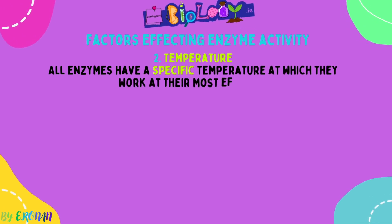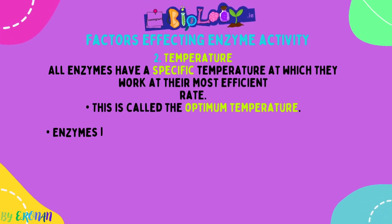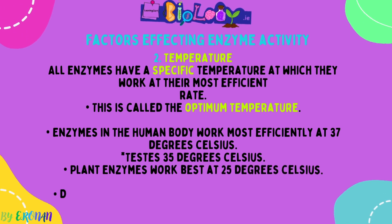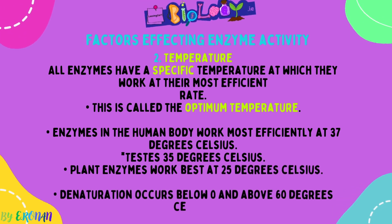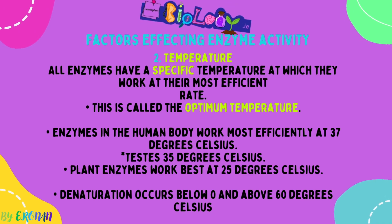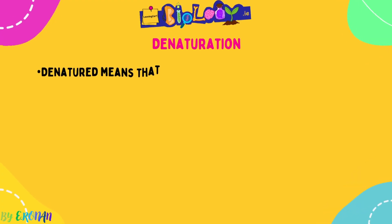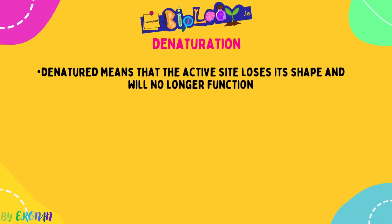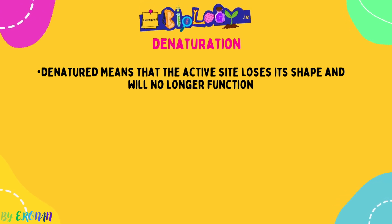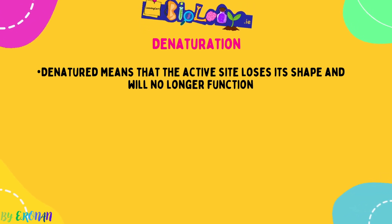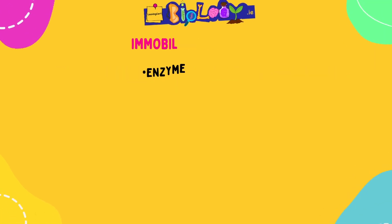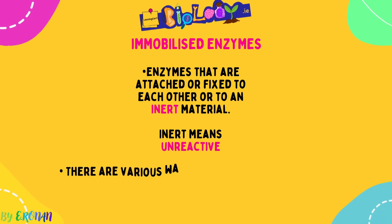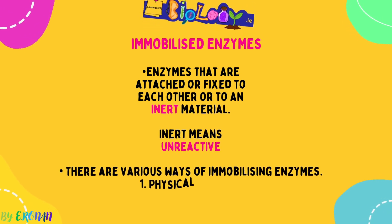The second factor is temperature. All enzymes have a specific temperature at which they work at their most efficient rate, called their optimum temperature. Enzymes in the human body work at 37 degrees Celsius, except for the testes at 35. Plant enzymes work best at 25 degrees Celsius, and denaturation occurs above 60 degrees or below zero. Denaturation means that the active site of an enzyme loses its shape permanently and therefore will no longer function because the substrate can no longer fit it. You can denature an enzyme by high or low temperatures or an incorrect pH.